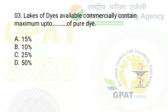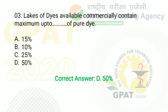The next question: lakes of dyes available commercially contain maximum up to dash of pure dye. Options are A: 15%, B: 10%, C: 25%, and D: 50%. The right answer of this question is option D, that is 50%.